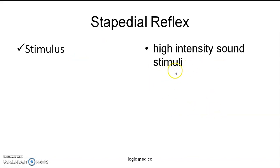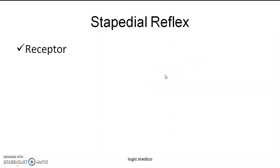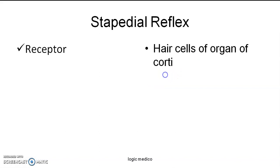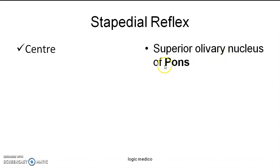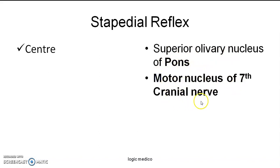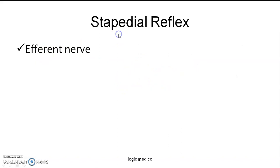For stapedial reflex, the stimulus is high intensity sound stimuli. The receptor is the hair cells of the organ of Corti — the receptor for hearing — which is also the receptor for stapedial reflex. The afferent nerve is the eighth cranial nerve, or the vestibulocochlear nerve, which carries information towards the CNS. The center for stapedial reflex is the pons — specifically the superior olivary nucleus of the pons. The motor nucleus of the seventh cranial nerve is also situated at the pons, and both act as the center. The efferent nerve is the seventh cranial nerve, or the facial nerve, carrying information from the brainstem.